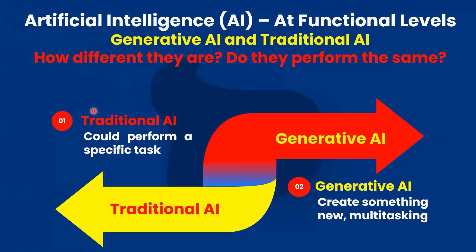Traditional or classical AI relies on predefined rules and programmed logic to perform tasks. Traditional AI may involve explicit programming to handle specific tasks without the learning capabilities of more modern machine learning approaches.